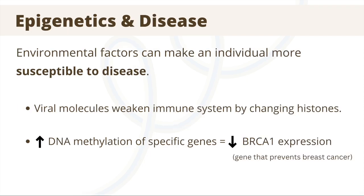Now let's talk about the relationship between epigenetics and disease, because things can go wrong with epigenetic changes. That is, genes can be incorrectly turned on or turned off. So environmental factors can make an individual more susceptible to disease. For instance, viral molecules can weaken the immune system by changing histones, and this allows the virus to replicate and live inside its host.